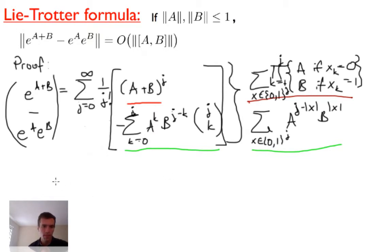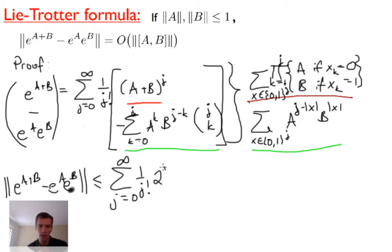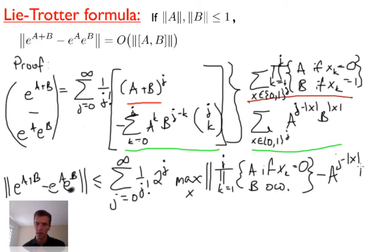Now let's bound the difference between them. The norm of e^(A+B) minus e^A e^B is at most the sum from J=0 to infinity of 1 over J factorial times, there's 2^J terms (one for every possible string X), so this is 2^J times the largest difference. That is, the max over all X of the difference between the product from K=1 to J of (A if X_K=0, B otherwise) minus A^(J-|X|) B^(|X|).